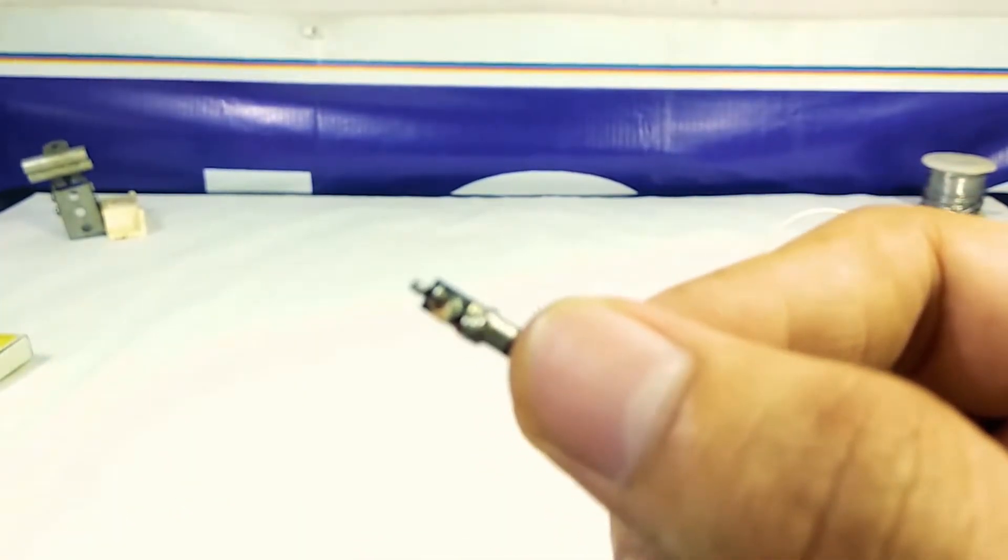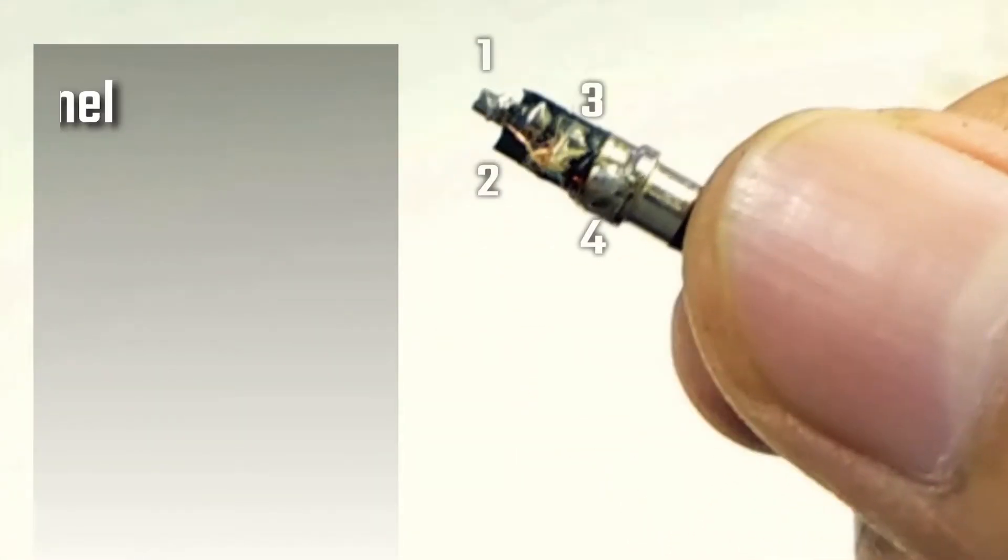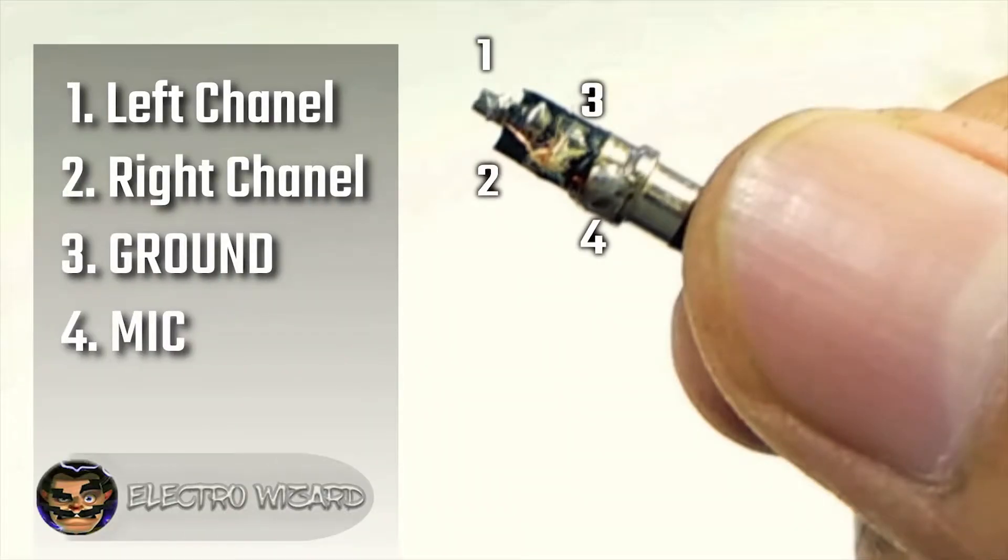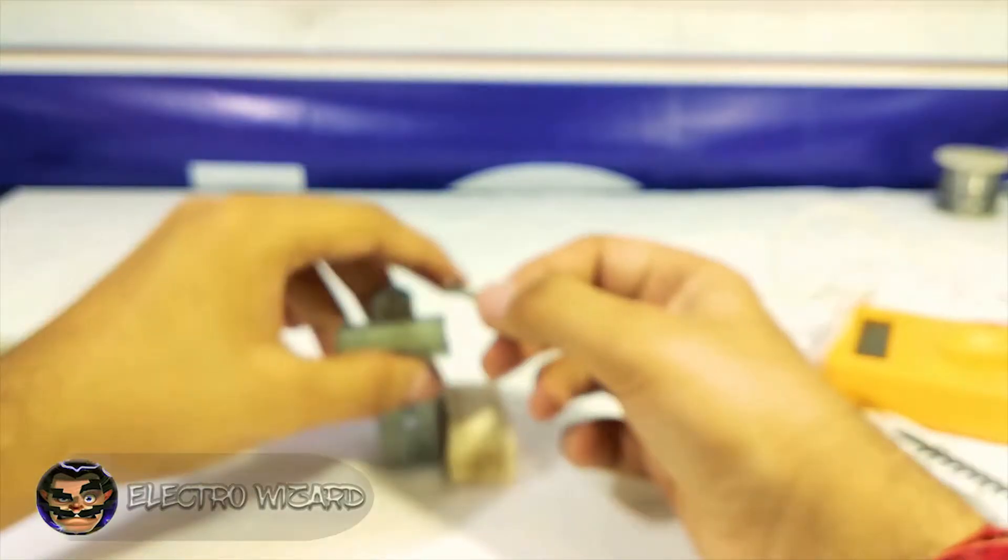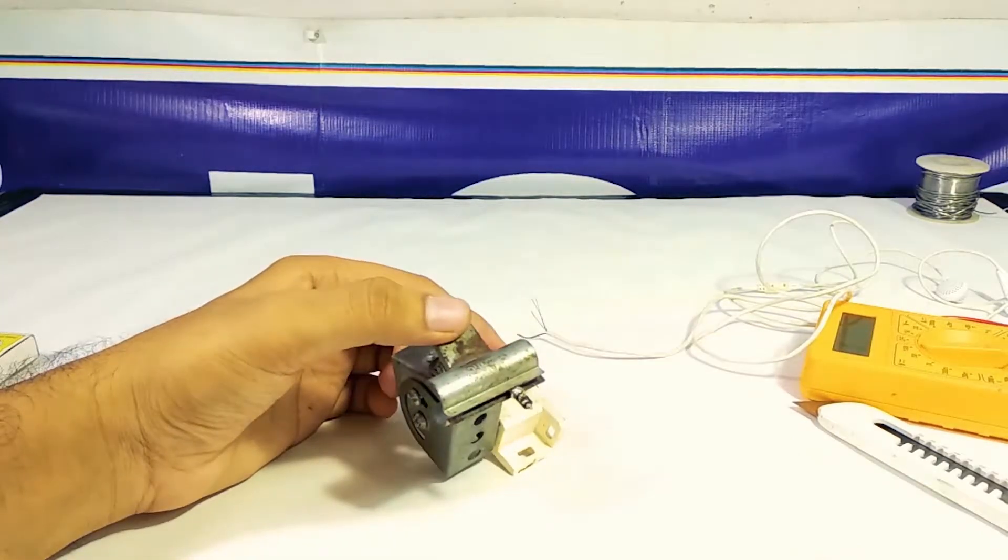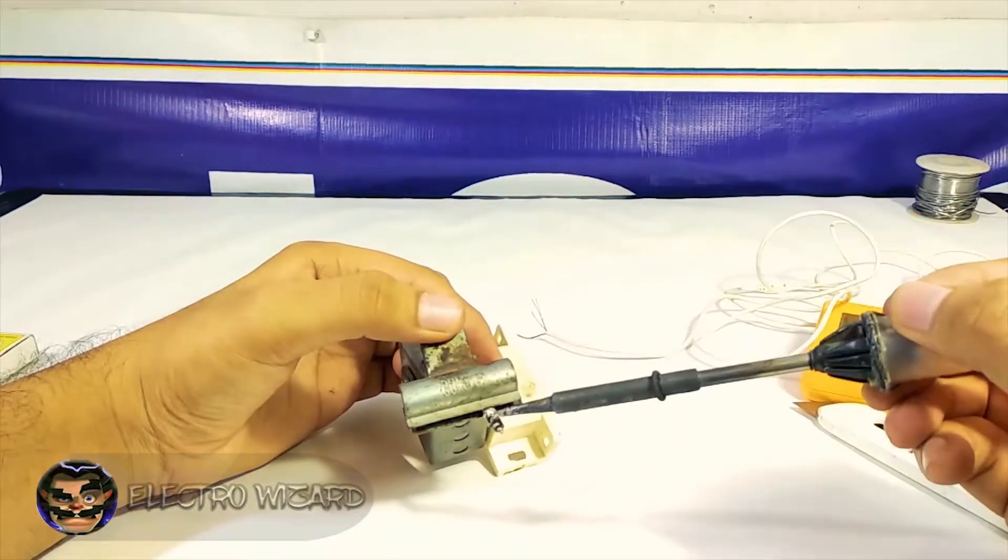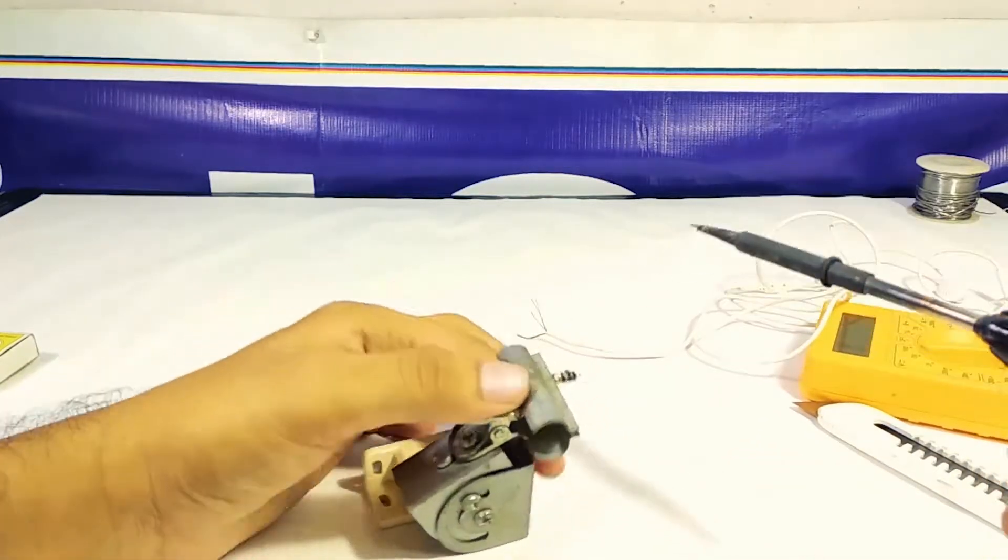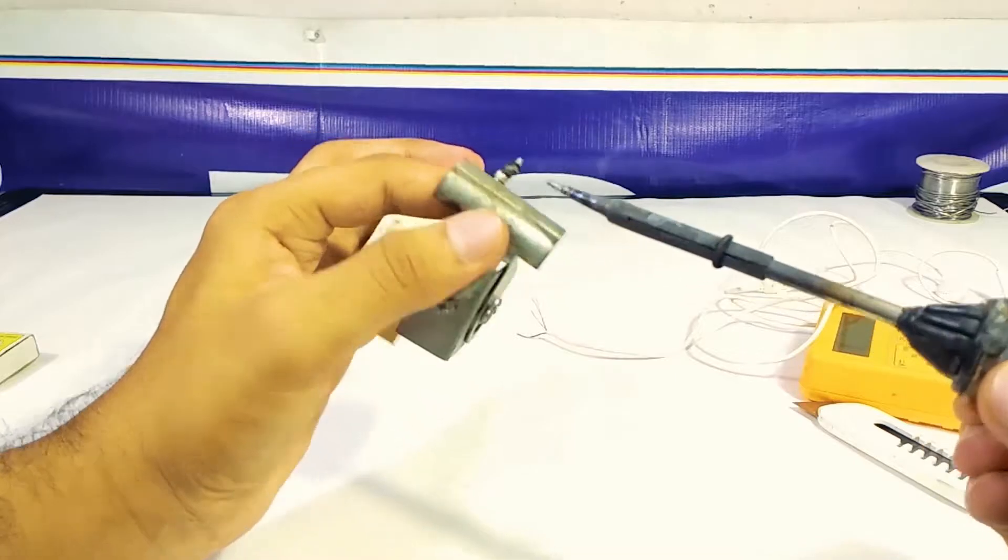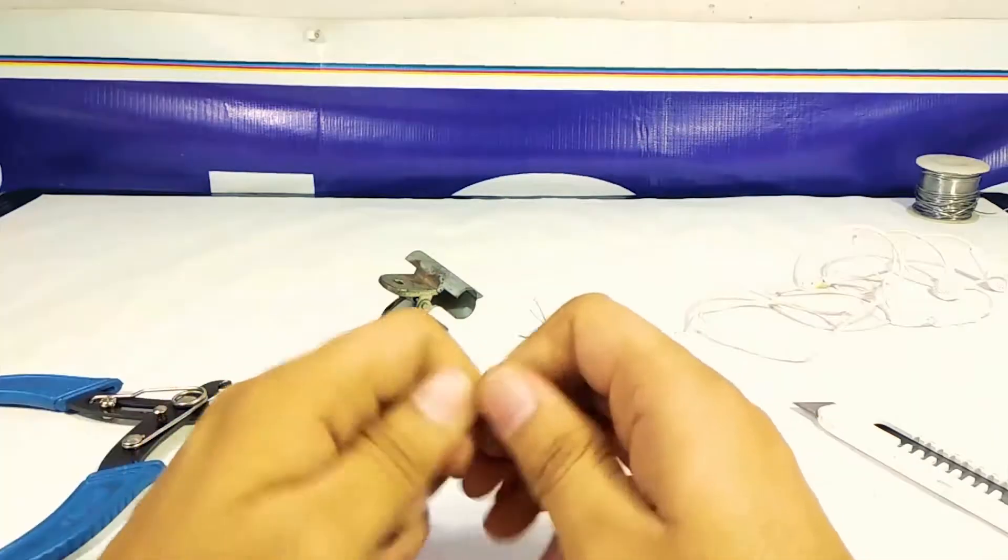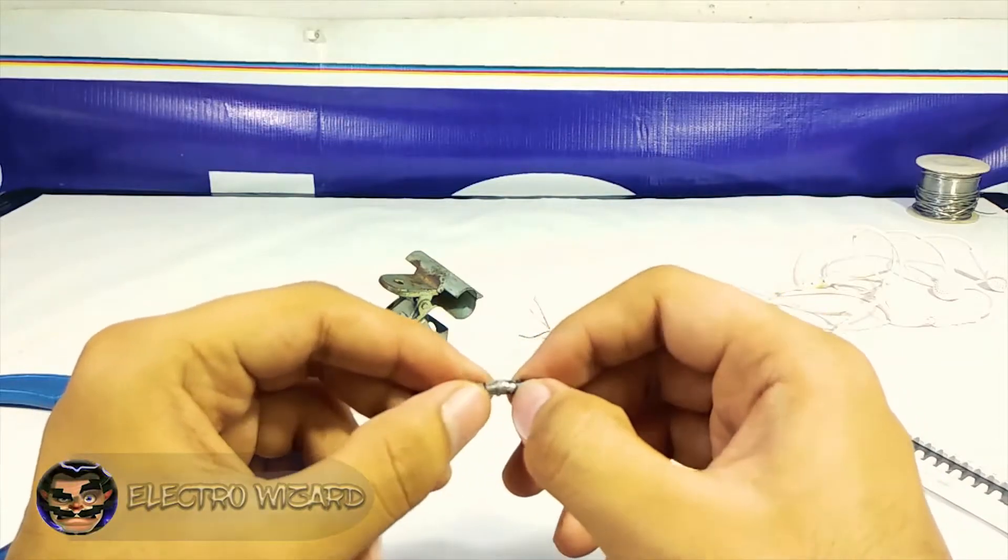The 3.5 jack has four points: first is left channel, second is right channel, third is ground, and fourth is mic. Now we're doing the process of tinning. Tinning is nothing but a process in which we pre-solder point of contacts. The process is called tinning because the solder is made of tin, so we're just applying a surface of tin on the point of contacts. Be careful while soldering - you can damage the 3.5 jack.